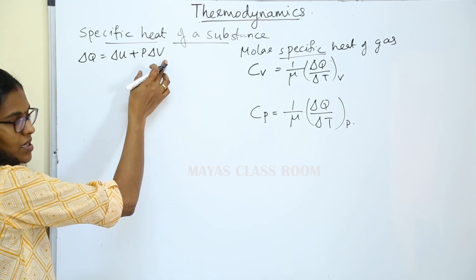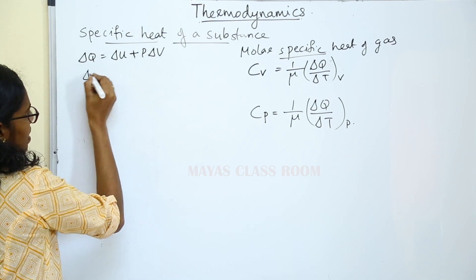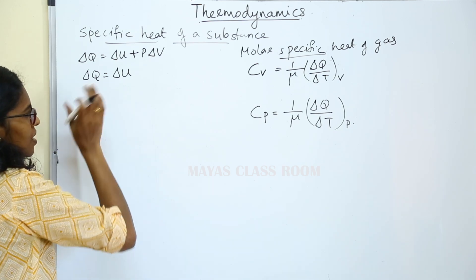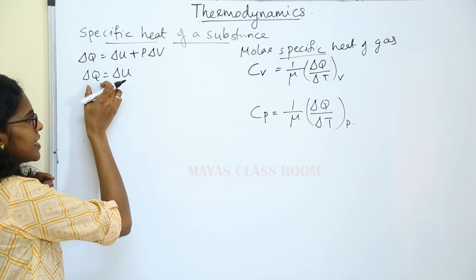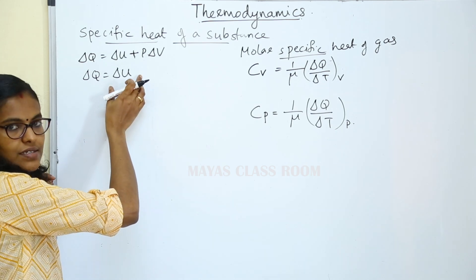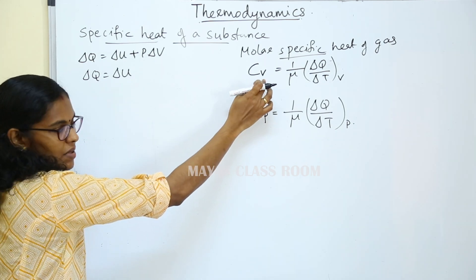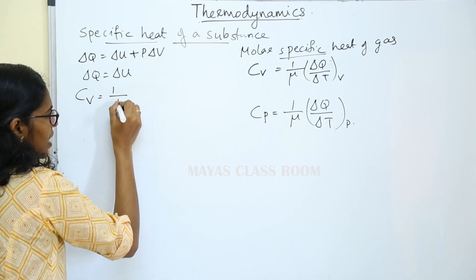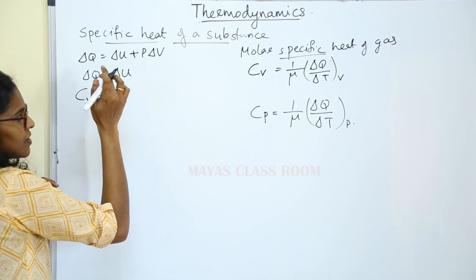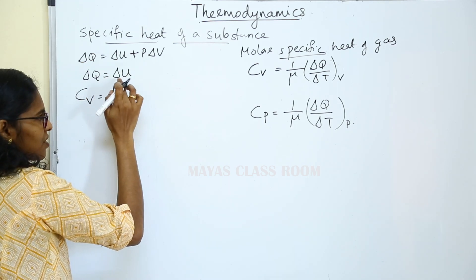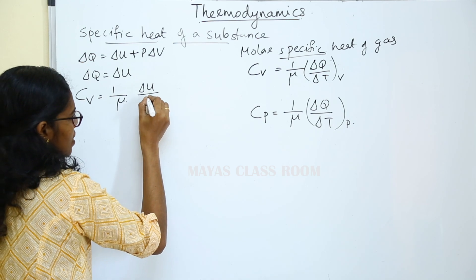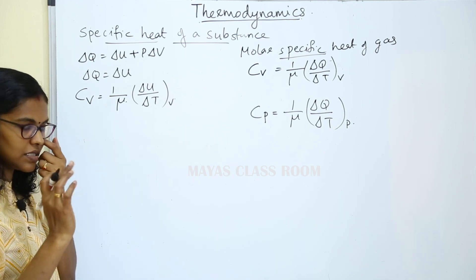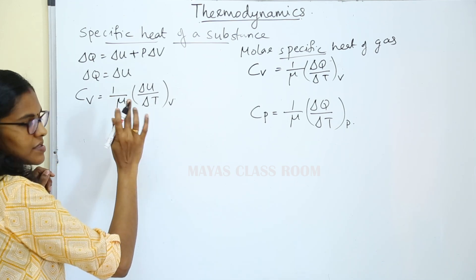At constant volume, delta V is zero. So the equation is delta Q is equal to delta U. The amount of heat at constant volume is equal to delta U. So the relation is CV is equal to 1 by mu into delta U divided by delta T at constant volume. Then we consider 1 mol, so mu is 1, and CV is equal to delta U divided by delta T at constant volume.